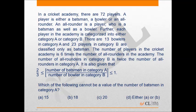The number of players in the cricket academy is 6 times the number of all-rounders in the academy. From here we can say that the number of all-rounders is one-sixth of the number of players, which turns out to be 12.